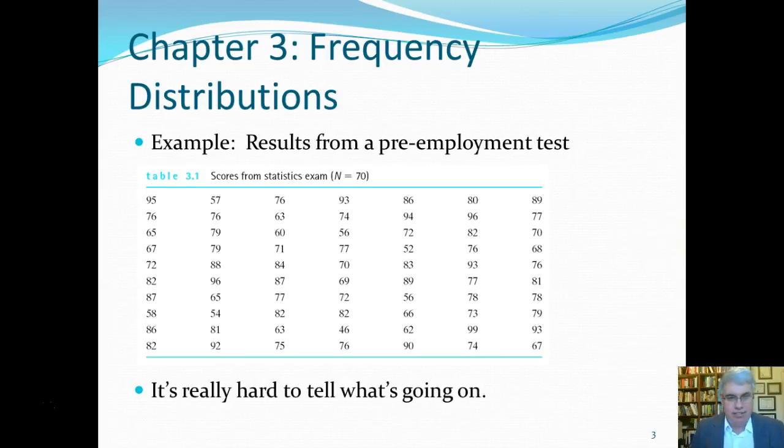Let's take this example where we have 70 scores on a test. Let's say this is from a pre-employment test. We did a test maybe on writing ability, maybe on cognitive ability, maybe a skills test, something like that. And we have the results from 70 employees.